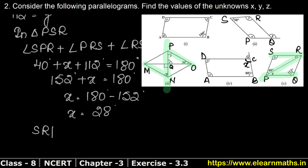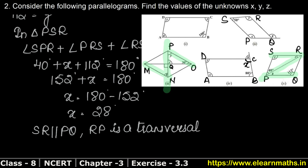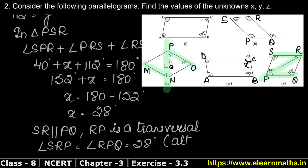SR is parallel to PQ and RP is a transversal. So angle SRP equals angle RPQ — these are the alternate interior angles. So z equals x equals 28 degrees.